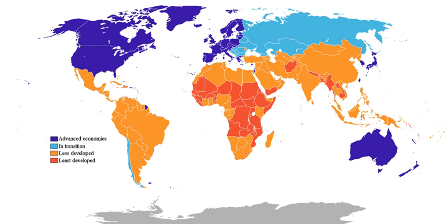Which criteria are to be used and which countries can be classified as being developed are subjects of debate. Developed countries have generally post-industrial economies, meaning the service sector provides more wealth than the industrial sector. They are contrasted with developing countries, which are in the process of industrialization or are pre-industrial and almost entirely agrarian, some of which might fall into the category of least developed countries.